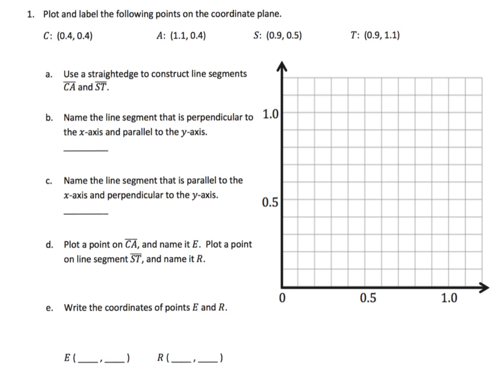But anyway, let's get going. It says plot and label the following points. And you'll notice our axes, our coordinates, are now in decimals. And because this is 0.5, I'm going to assume this is 0.1, 0.2, 0.3, 0.4, 0.5. So each of these have been cut into a tenth.